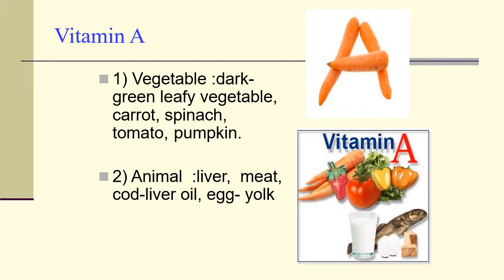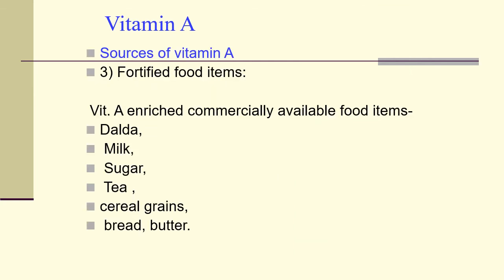Dark green leafy vegetables are a key source, and animal sources include liver, meat, cod liver oil, and egg yolk. There are also fortified food items — vitamin A enriched commercially available foods. For example, dalda (a type of ghee) was fortified with vitamin A — this is called food fortification. Dalda, milk, sugar, tea, cereal grains, bread, and butter have all been enriched with vitamin A.